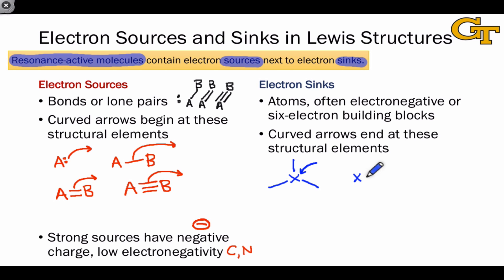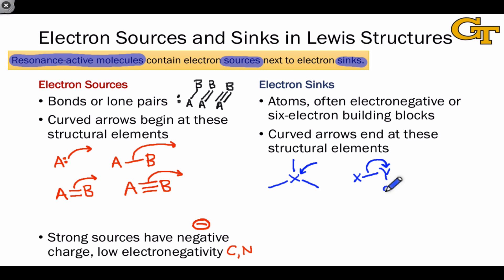We can also end electron flow on atoms within bonds by breaking a bond and sending the pair of electrons in the bond to one of the two atoms — typically the more electronegative of the two — so that the atom with partial negative charge receives a full negative charge in the resulting products.